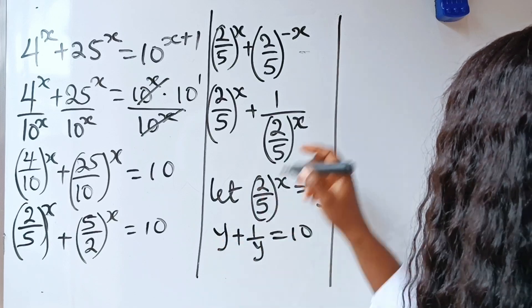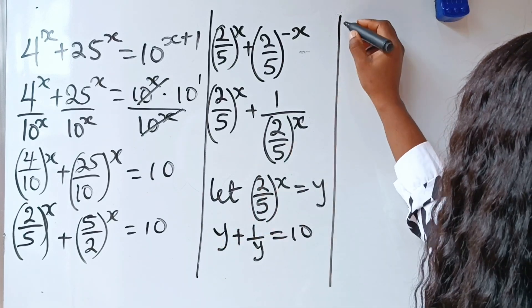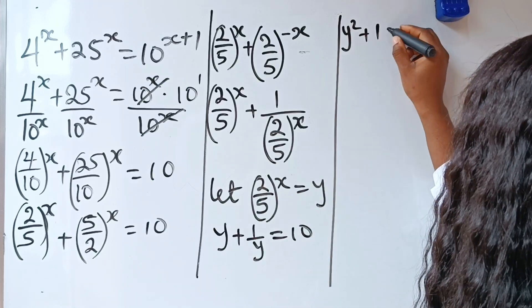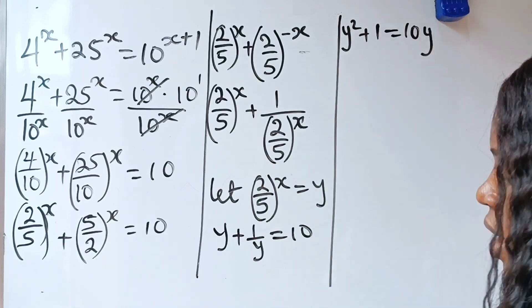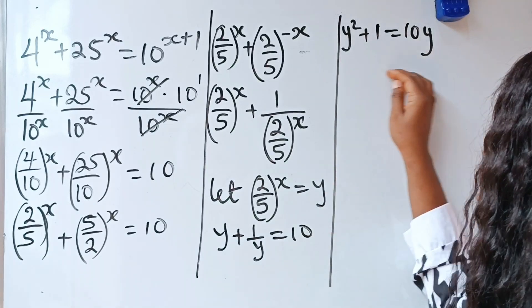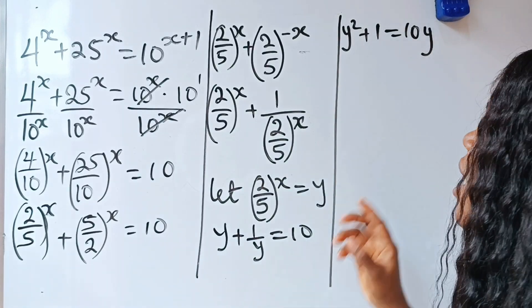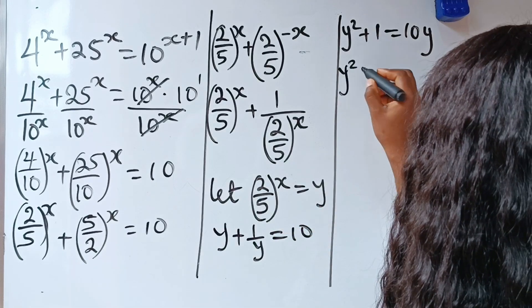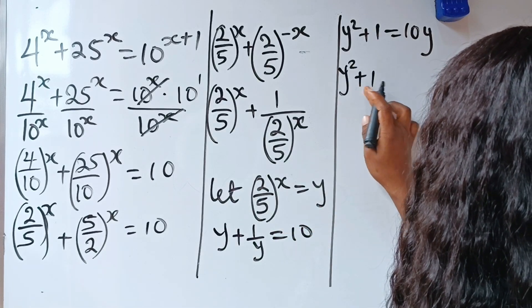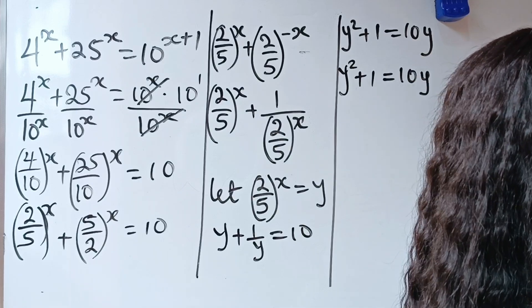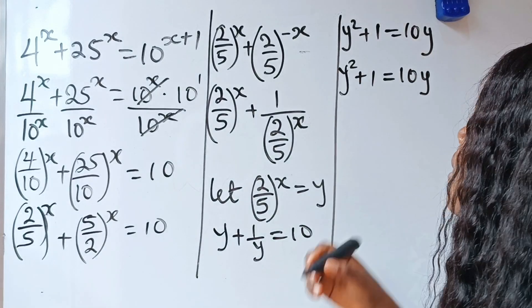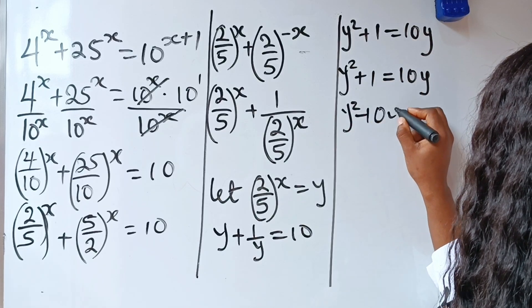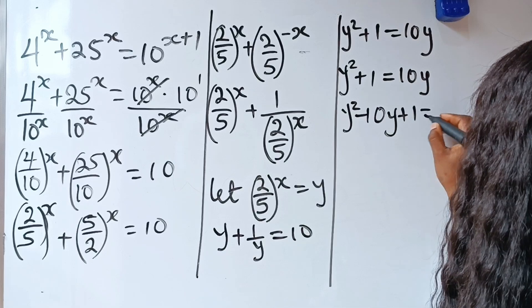y multiplied by y will give me y squared. So we have y squared plus 1 is equal to 10y. Then, that means that y squared minus 10y plus 1 is equal to 0.